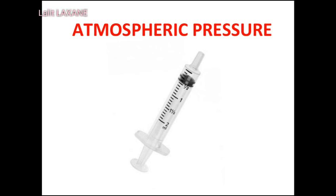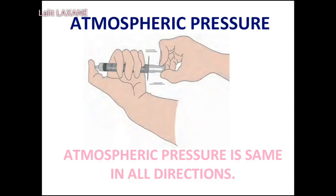The molecules of the gases in the air are in constant motion. When these molecules strike a body, they create pressure on that body. This is the pressure of air that we call atmospheric pressure. On pulling the piston with the inlet hole of the syringe closed, more space becomes available to the air in the syringe and it becomes rarefied. As a result, the pressure of the air in the syringe is lowered. Comparatively, the pressure of the outside air is very high. That is why when the pulled-out piston is released, it is immediately pushed in.